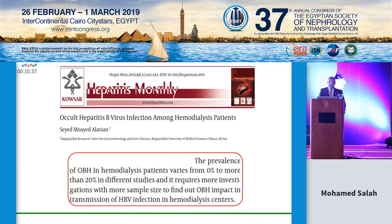In the Hepatitis Monthly journal, occult hepatitis B virus infection among hemodialysis patients in Tehran was studied and the prevalence of occult hepatitis B in hemodialysis was found to vary from 0% to 20% in different studies. It requires more investigations with larger sample sizes to find out the impact of occult hepatitis on transmission of hepatitis B infection in hemodialysis patients.